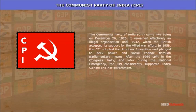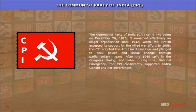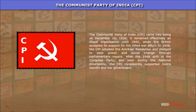Communist Party of India (CPI): The Communist Party of India came into being on December 26, 1926. It remained effectively an illegal organization until 1942, when the British accepted its support for the Allied war efforts. In 1958, the CPI adopted the Amritsar Resolution and pledged to seek power and social change through parliamentary means. After the 1969 split in the Congress Party and later during the national emergency, the CPI consistently supported Indira Gandhi and her government.